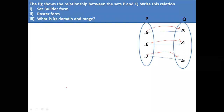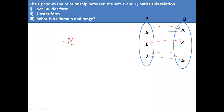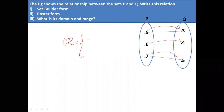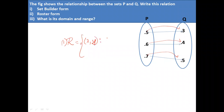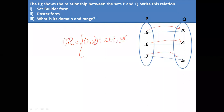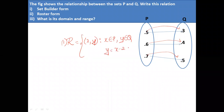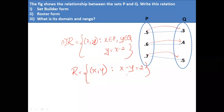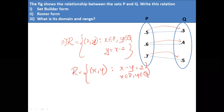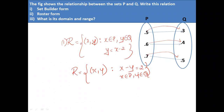You can write it in two ways. The set builder form: R is equal to set of all (x, y) where x belongs to P, y belongs to Q, and y is equal to x minus 2. Or you can write it as set of all (x, y) such that x minus y is equal to 2, where x belongs to P and y belongs to Q. You can write any of these two forms.